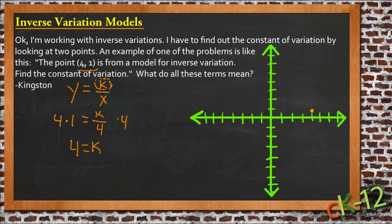So for the first answer there, Kingston, your constant of proportionality, k, is 4. And then we can actually graph this function, because now that we know the constant of proportionality we can write out the actual function, and we get y equals 4 over x.